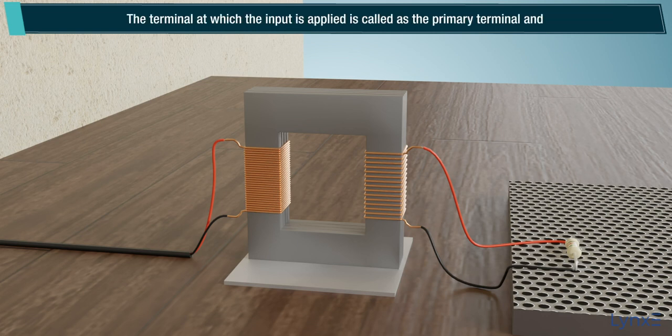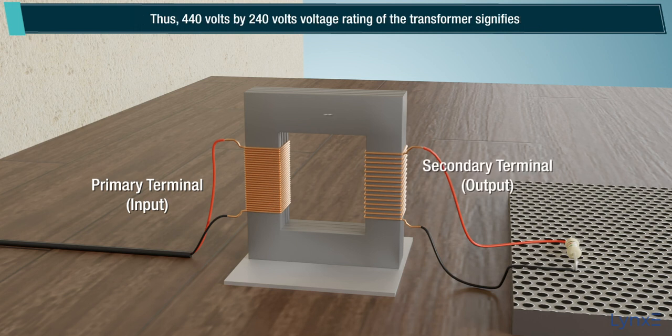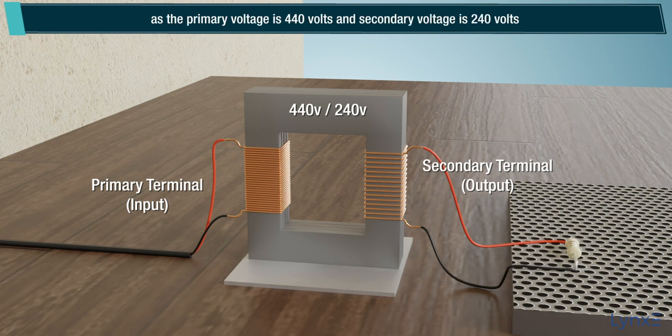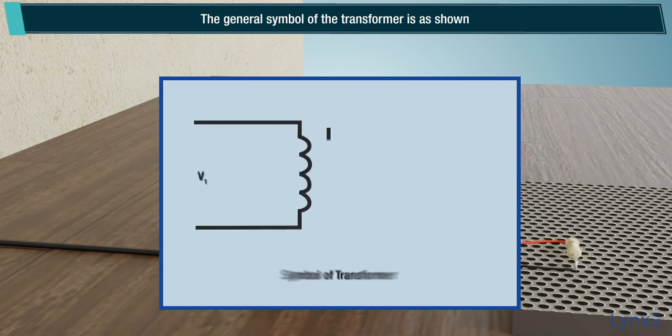The terminal at which the input is applied is called the primary terminal. And the terminal across which output is measured is called the secondary terminal. Thus, 440 volts by 240 volts voltage rating of the transformer signifies the primary voltage is 440 volts and secondary voltage is 240 volts. The general symbol of the transformer is as shown.